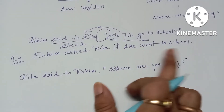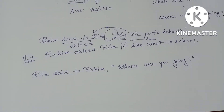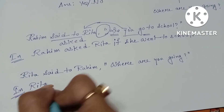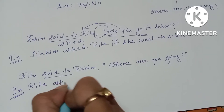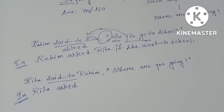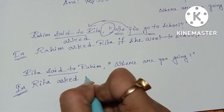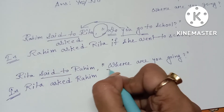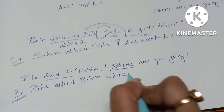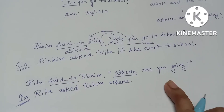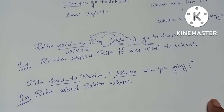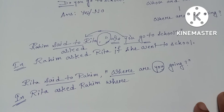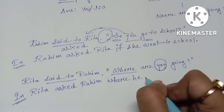Now let's come to WH questions. The sentence is: 'Rita said to Rahim, where are you going?' Again, 'said to' changes to 'asked,' so we write: 'Rita asked Rahim.' You don't need to write 'that' — instead write the WH word: 'where.' The sentence 'where are you going?' is in present continuous tense, which changes to past continuous. 'You' refers to Rahim, so it becomes 'he.' The assertive form: 'Rita asked Rahim where he was going.' Full stop.